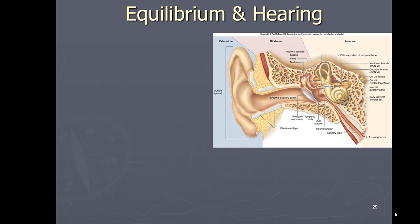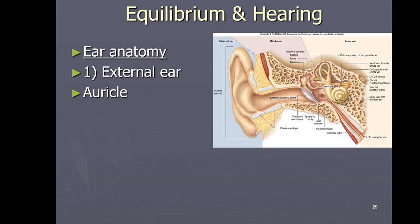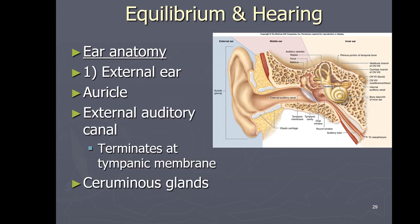We're going to continue talking about the ear and how it is used for our ability to detect equilibrium and hearing. Let's start with the external anatomy of the ear. We have two ears, and for external anatomy there are three parts to each ear: external, middle, and inner. The external part is basically what you see — this big flap is called the auricle, and inside it you have what's called the ear canal or external auditory canal, which continues until your eardrum begins.